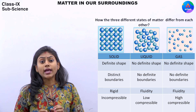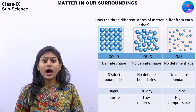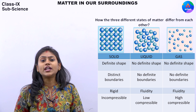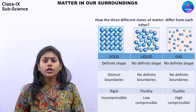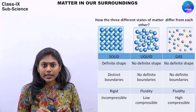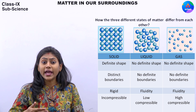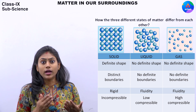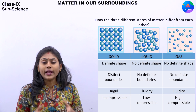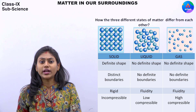Gas की भी कोई definite shape नहीं होती। अगर हम cylinder देखें या bottle देखें तो gas उस container का shape ले लेती है। Boundaries की बात करें: solid जैसे chair या duster की boundary clearly दिखती है। लेकिन अगर पानी ज़मीन पर गिरा हो तो कोई definite boundary नहीं होती। So, solids have distinct and definite boundaries, whereas liquid and gas do not have definite boundaries।